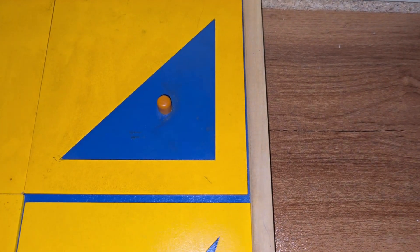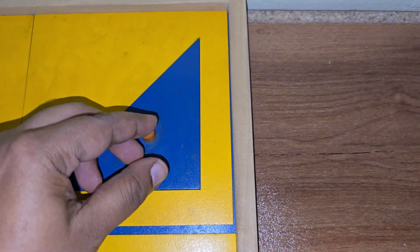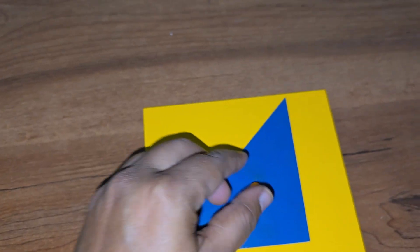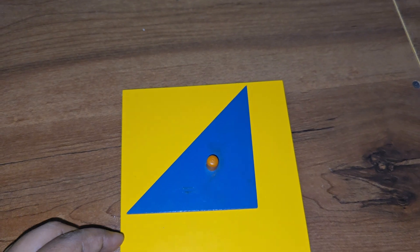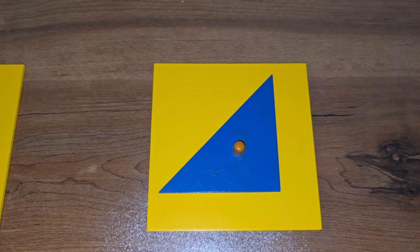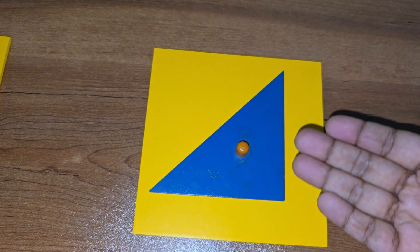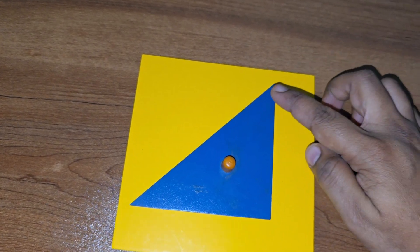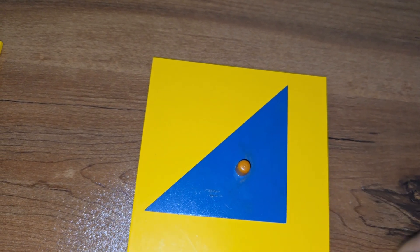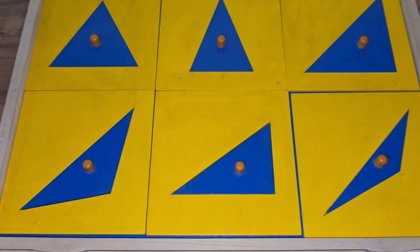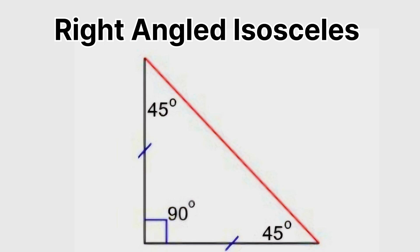The next one: right-angle isosceles. Do you know the speciality of right-angle isosceles triangle? Here, one angle will be 90 degrees and the other two are equal to each other. That means 90, 45, and 45. Do you understand?